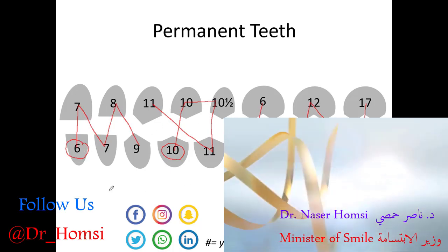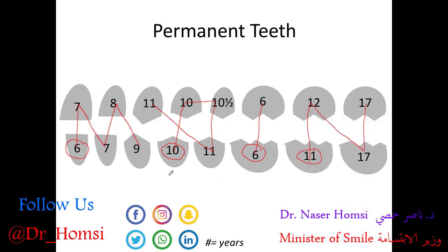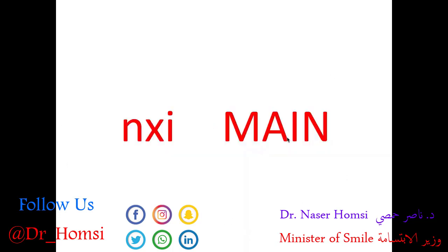Some other general facts for tooth eruption: mandibular teeth usually erupt before maxillary teeth, especially in the permanent dentition. Generally, teeth in females erupt earlier than those same teeth in males. In both males and females, tooth eruption should occur symmetrically — if the lower left first premolar is erupting, the lower right first premolar should also be erupting or close to it. Finally, the 2-3 rule: teeth normally erupt when two-thirds of their root has developed, and the root takes about two to three more years after initial eruption to complete its development.